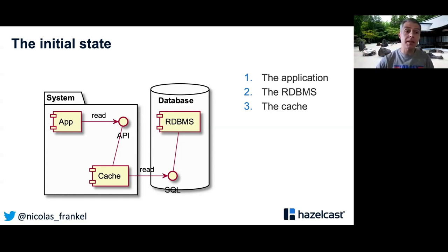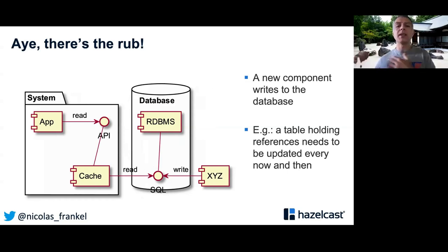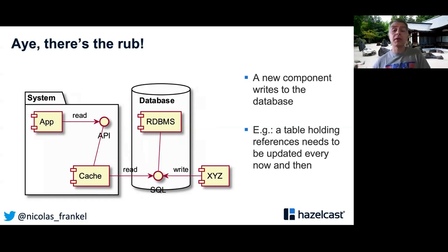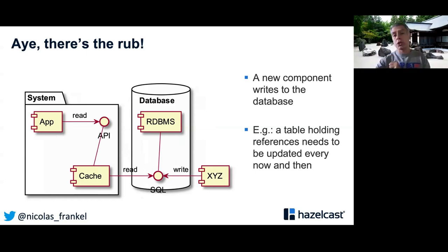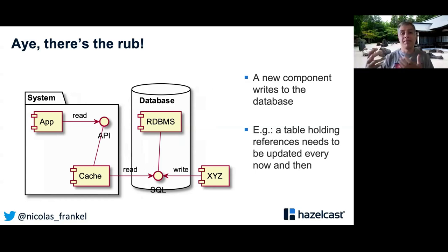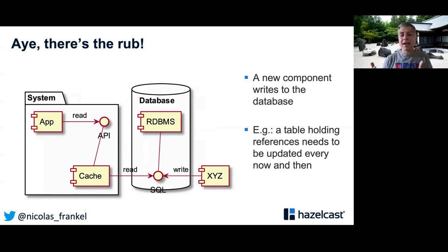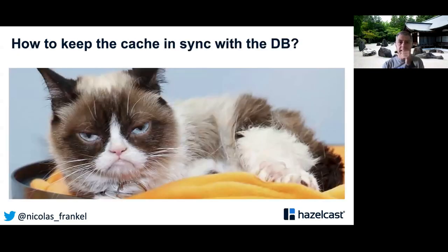That goes on for ages, until somebody decides we need to write to the database, but your application is not the only component doing that. There's another component — for example, a batch job. That batch job needs to update a reference table. And now you have an issue because your cache is not the main point of entry. So how does your cache know that something has changed? How do you keep the cache in sync with the database?